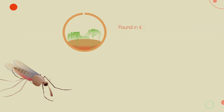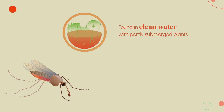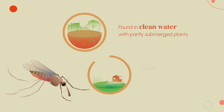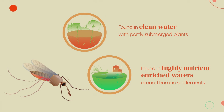The Anopheles species prefer clean, still water with partly submerged plants, but some can also be found in highly nutrient-enriched waters in and around human settlements.